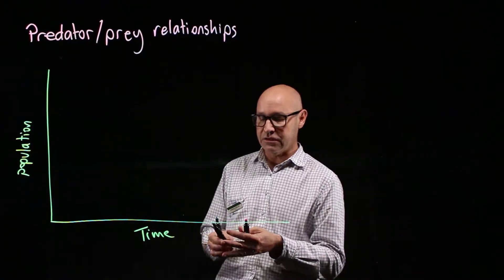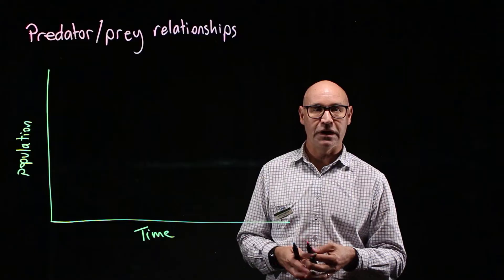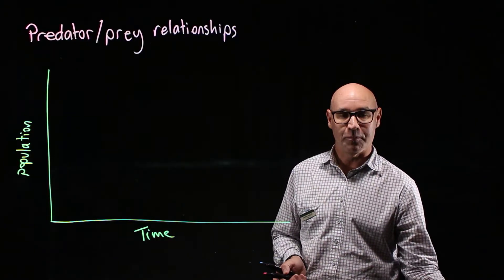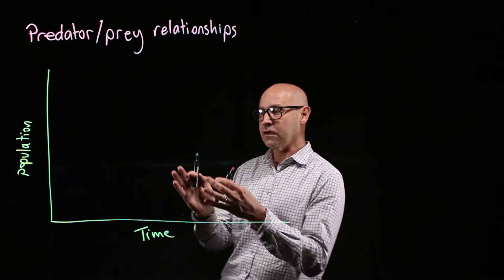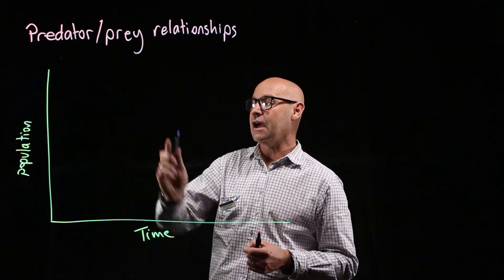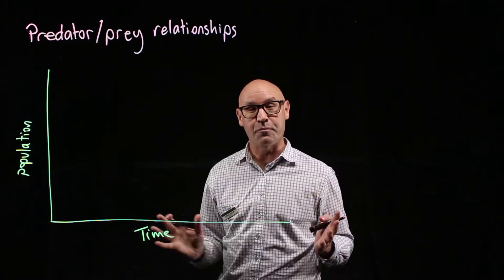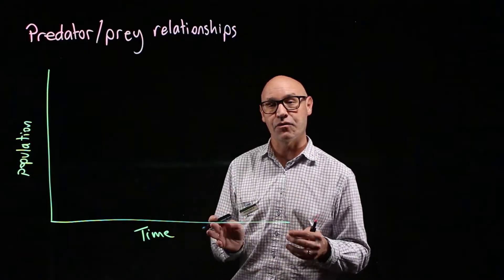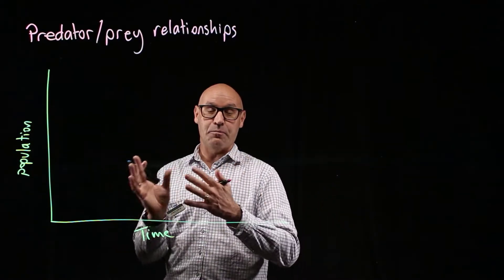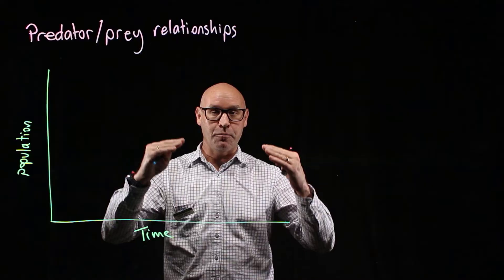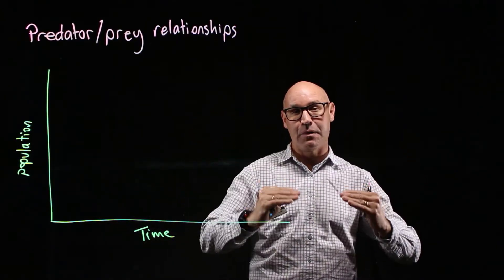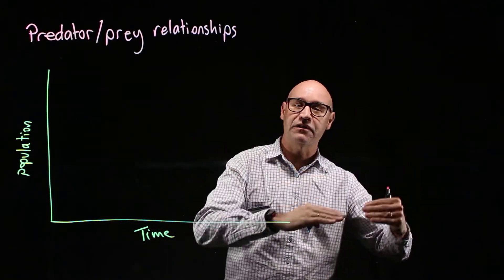I want you to see that there's a relationship between the predator population and the prey population. I'm going to start by drawing the prey graph. What we see with both species is that the population cycles — they have booms and busts. The population increases and then decreases.